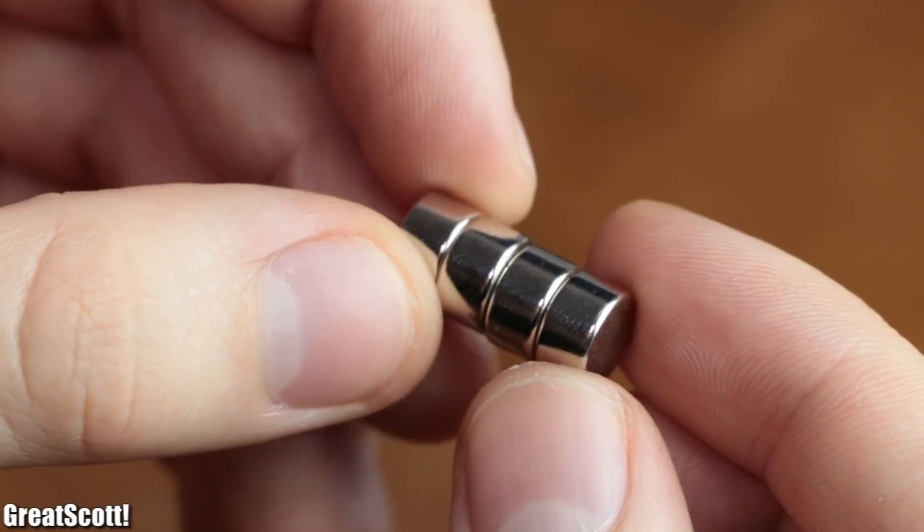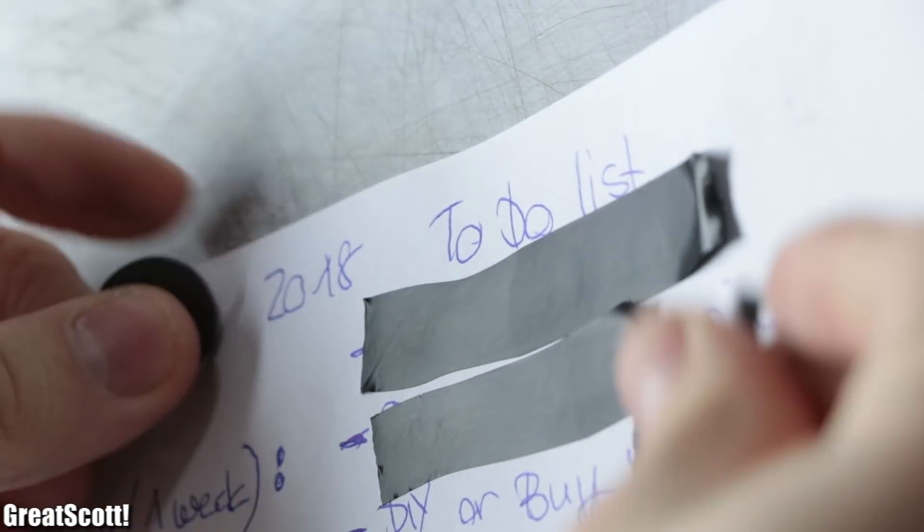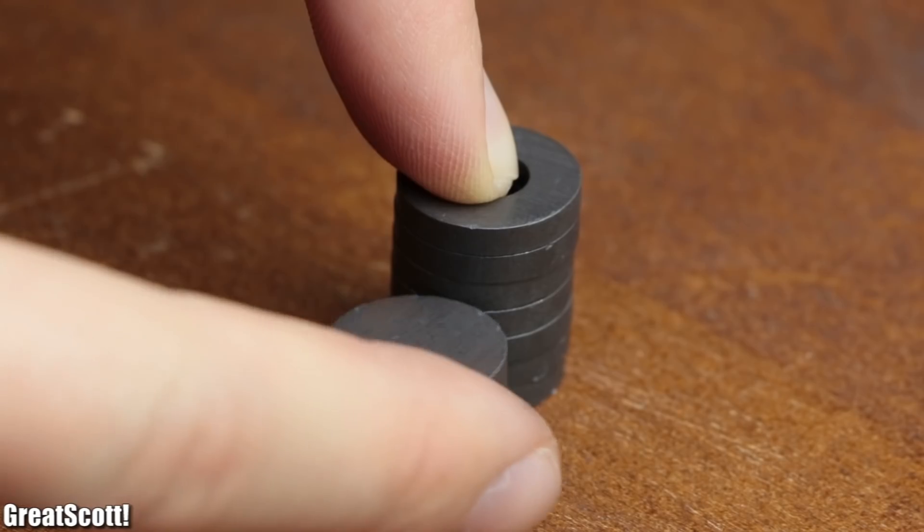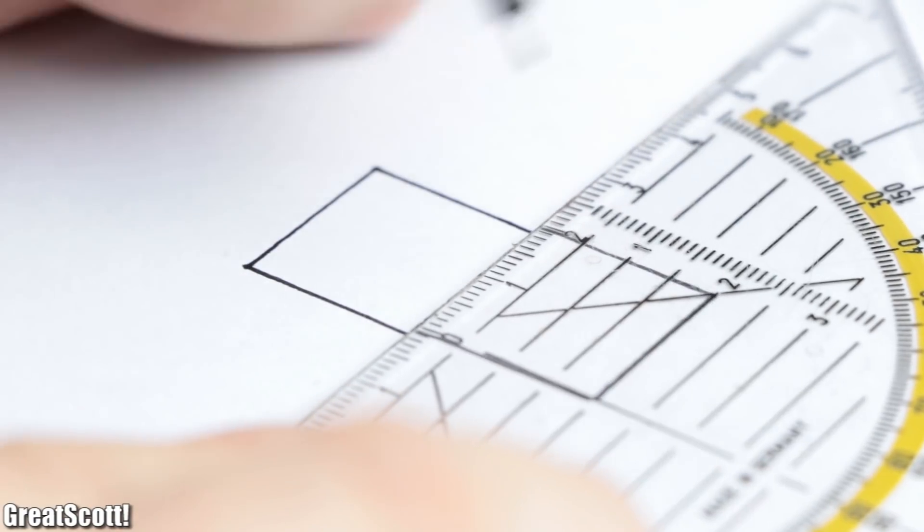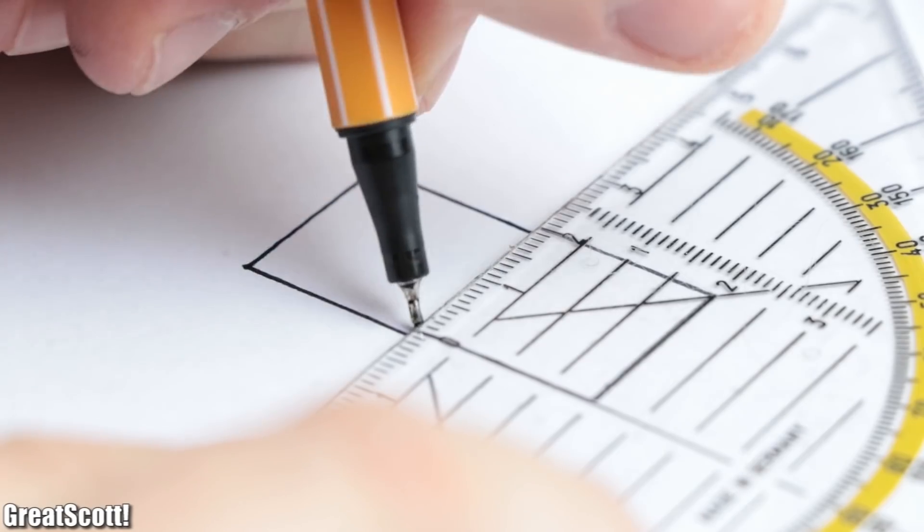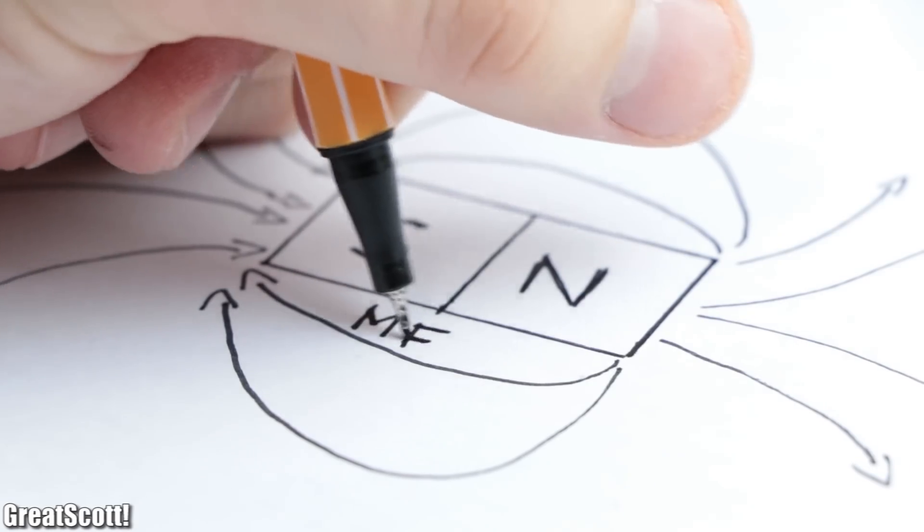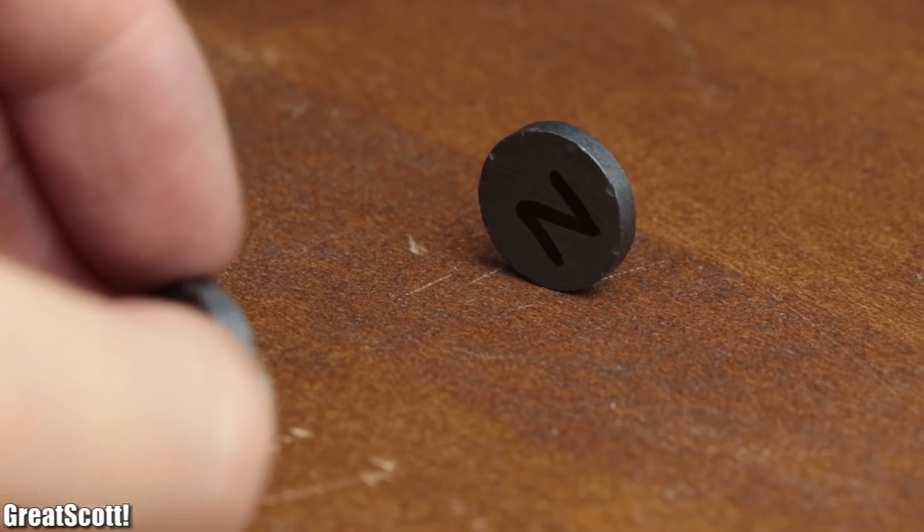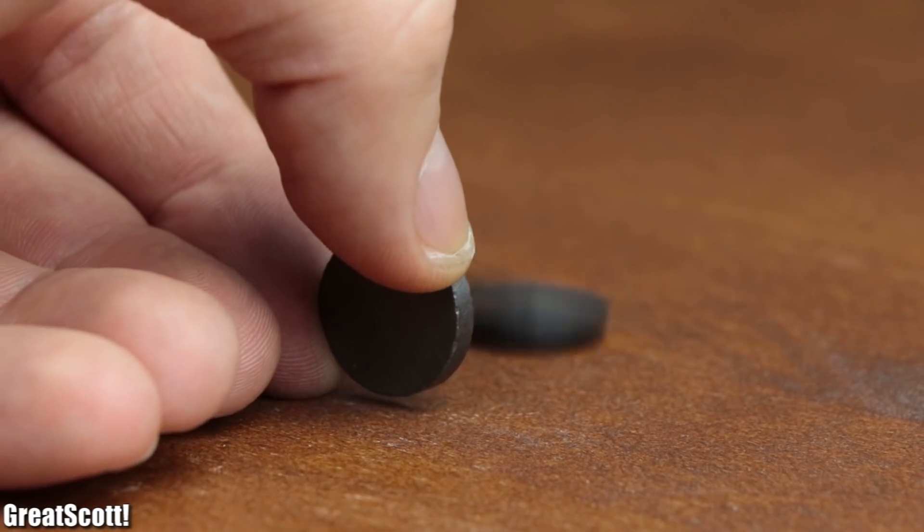Ferrite magnets and neodymium magnets are not only useful when it comes to securing important documents to your whiteboard, but are also a ton of fun to play around with. As you probably already know, such permanent magnets have two magnetic poles - one north and one south pole which both create a magnetic field. While the same magnetic polarities create a repulsive force, opposing magnetic polarities create an attraction force.